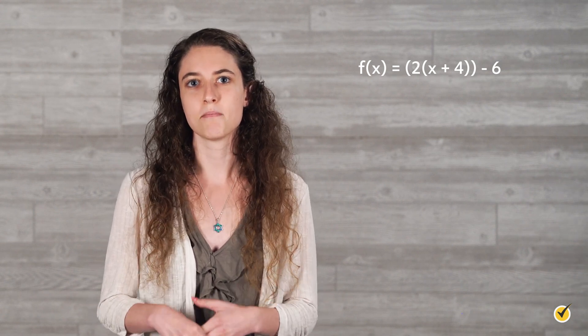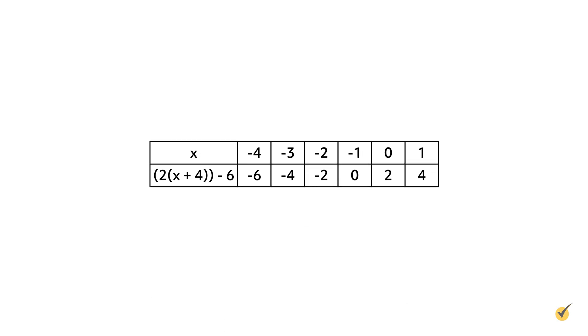Let's take a look at one more translation. This time, we'll translate f(x) equals 2x four units to the left and 6 units down. First, rewrite the equation by subtracting 6 from the y value outside the parentheses and adding 4 to the x value inside: f(x) equals 2 times x plus 4 minus 6. Next, complete a table. Since the graph shifts 4 units to the left, the x-coordinate decreases by 4. Since the graph shifts 6 units down, the y-coordinate decreases by 6.